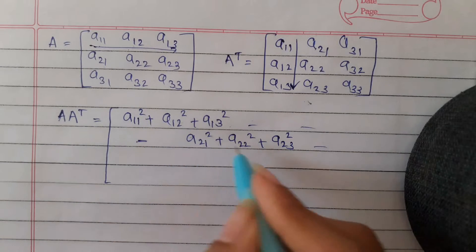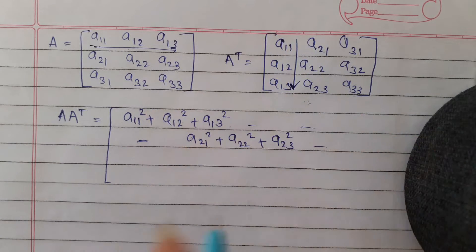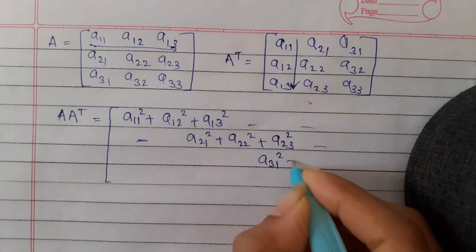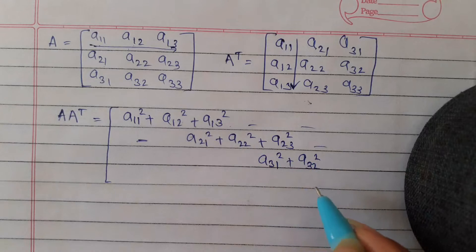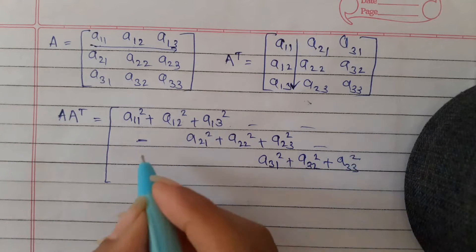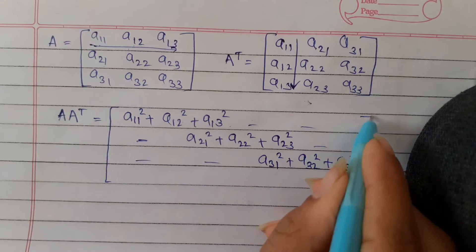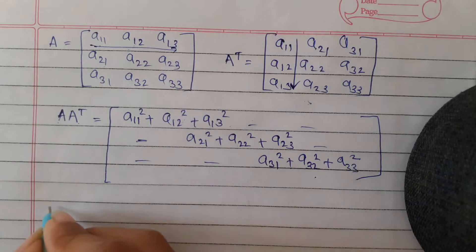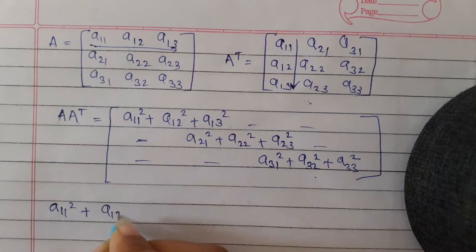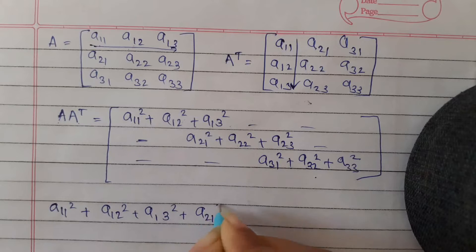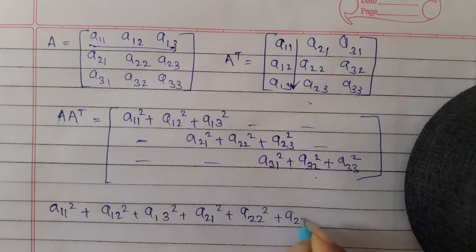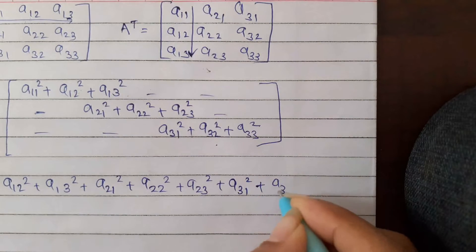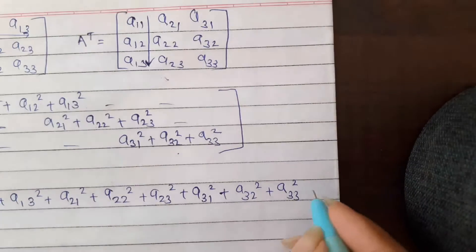There are other off-diagonal elements, but we only need the diagonal elements. So the condition becomes: A11² + A12² + A13² + A21² + A22² + A23² + A31² + A32² + A33² = 9. Now let us think of different cases in which we can obtain this sum.